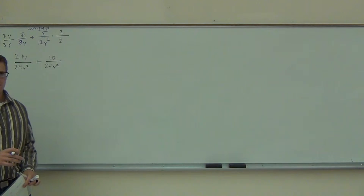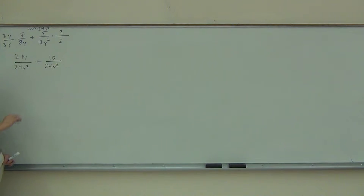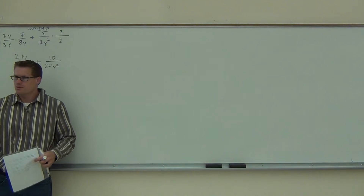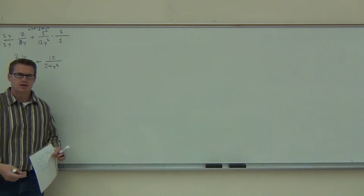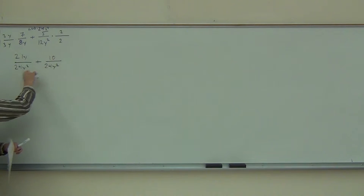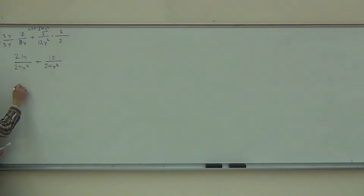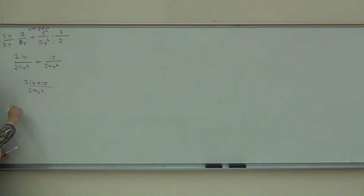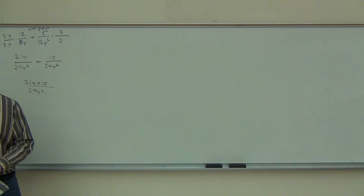We can see we have an LCD in each spot, so we did our math right. If you get different denominators, you've done something wrong—go back and fix that mistake. You just multiplied by the wrong thing. Last thing we're going to do is add them since we have a common denominator. We get 21y plus 10. We would try to factor, but it's not factorable, so you leave it just the way it is.